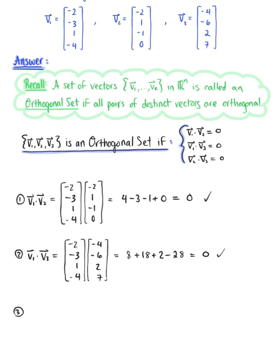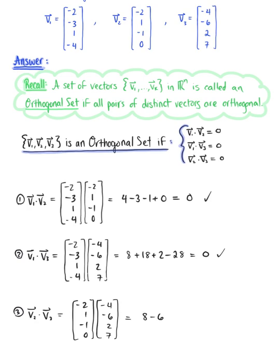Last but not least, case three: we are checking the dot product of vector v sub 2 with vector v sub 3. Vector v sub 2 has components (−2, 1, −1, 0) and we are dotting this with vector v sub 3, which has components (−4, −6, 2, 7). Computing this dot product, we have 8 − 6 − 2 + 0, which gives us 0.